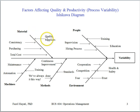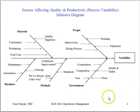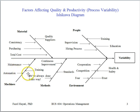Under materials, working with quality suppliers, consistency of the incoming material, and our purchasing policies all have major impacts on the output of the process or the variability in the process. Under machines, the maintenance of the machines and the training on new machines are very important.